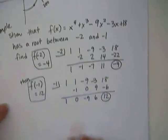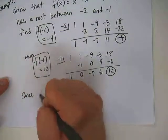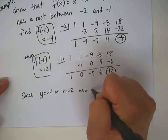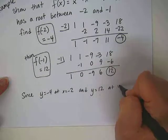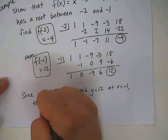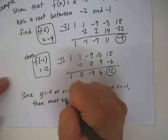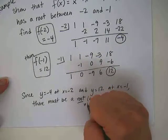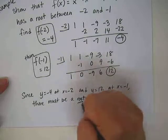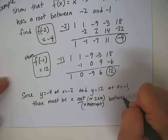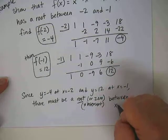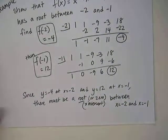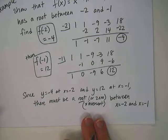The whole point of this is to show that since y equals negative 4 at x equals negative 2, and y equals positive 12 at x equals negative 1, then there must be a root or 0 or x-intercept between x equals negative 2 and x equals negative 1.